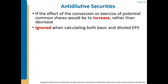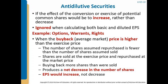If you have what are called anti-dilutive securities, you ignore these when calculating both basic and diluted earnings per share. Something is anti-dilutive if the conversion or exercise of the potential common shares would increase rather than decrease earnings per share. Examples would be options, warrants, and rights when the buyback price is higher than the exercise price.